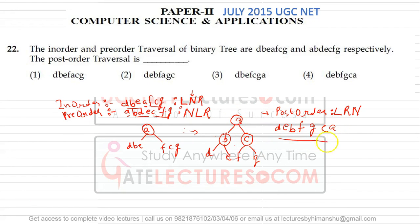So the post-order traversal of this tree will be: D, E, B, F, G, C, A. This is your answer.